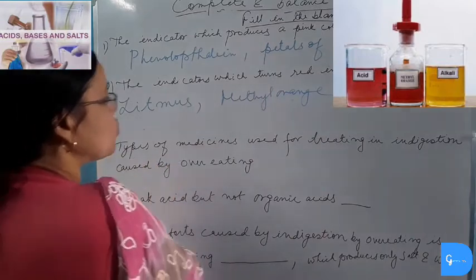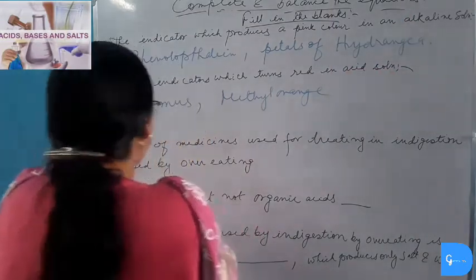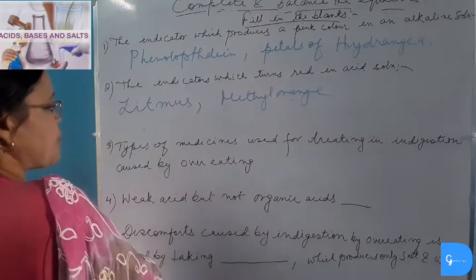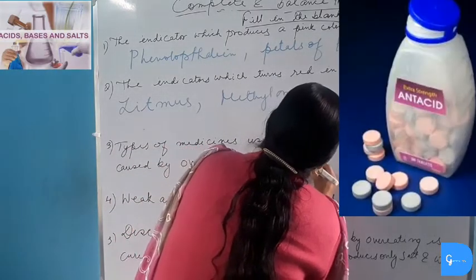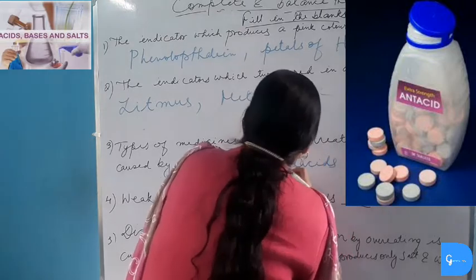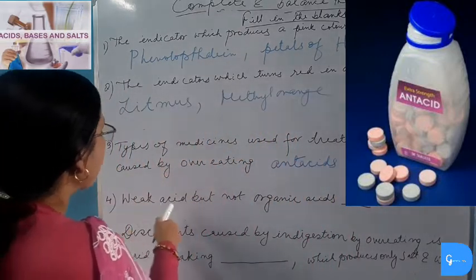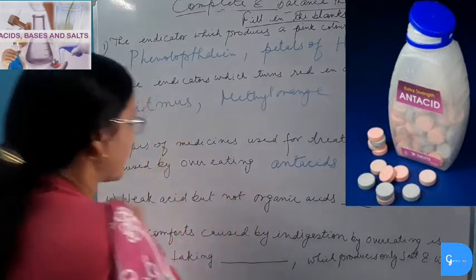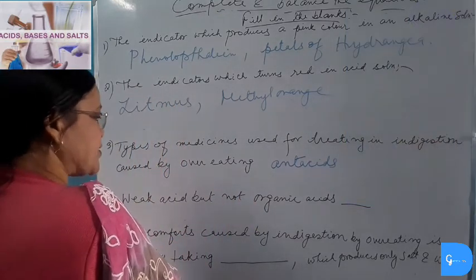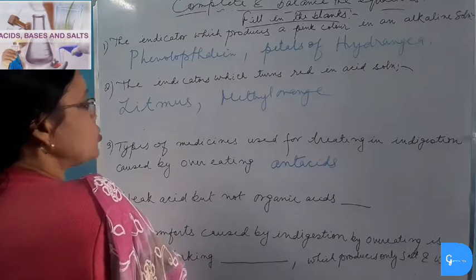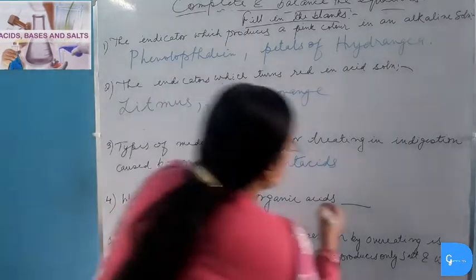Types of medicine used for treating indigestion caused by overeating: the name of these medicines is Antacids. Antacids destroy acids. Weak acids — but not organic acids. All organic acids are weak acids and all mineral acids are strong acids, except one: Carbonic acid.